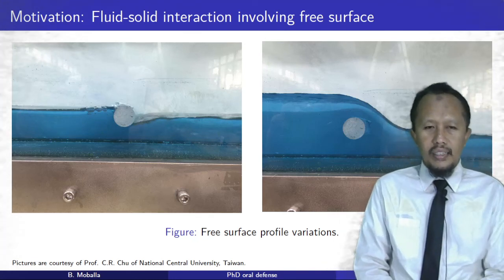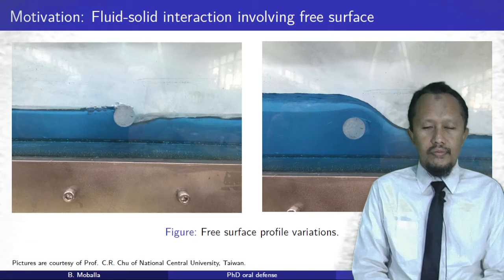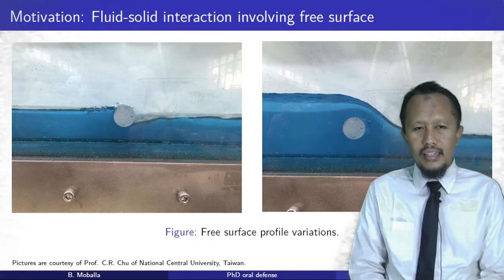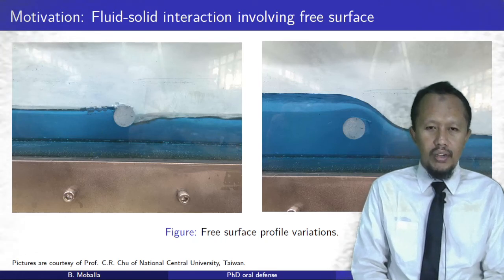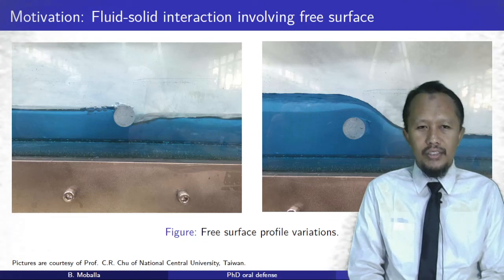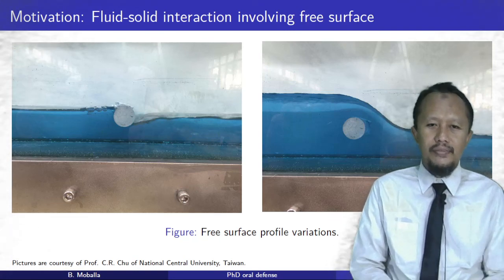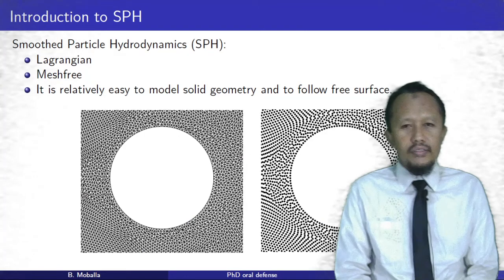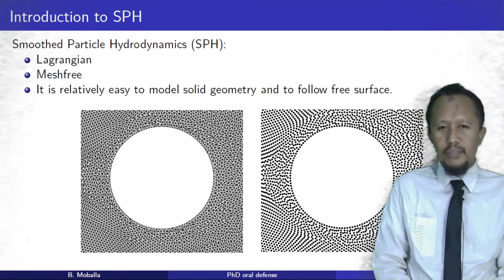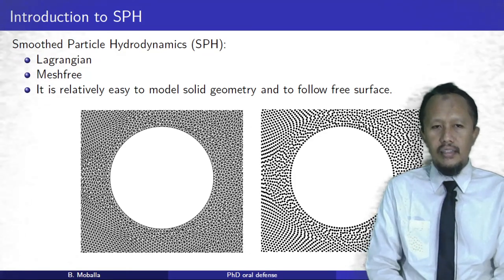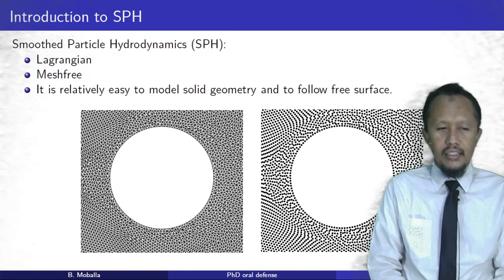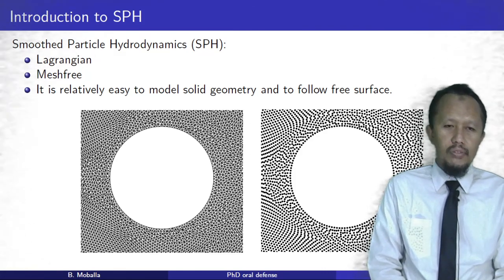This picture shows the same problem at a higher Reynolds number. I would like to thank Professor Too, as I obtained these pictures from him. Now I would like to introduce the SPH method. Smooth Particle Hydrodynamics is a Lagrangian, mesh-free method which is relatively easy to use for modeling solid geometry and following phase interfaces.